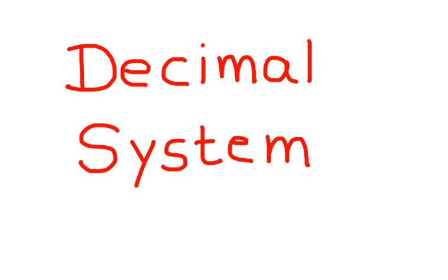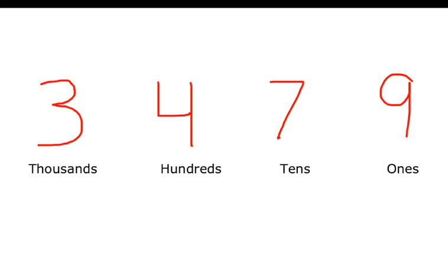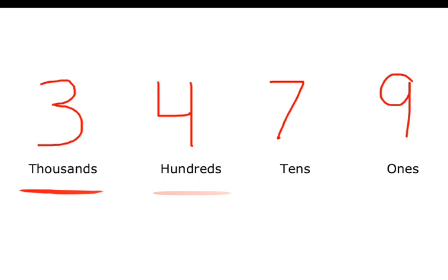Decimal system. Let's take a number 3, 4, 7, 9. To write the places, we move from right to left: ones, tens, hundreds, thousands.